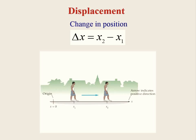Besides looking at where an object is located, we're also often interested in something called the displacement of the object. Displacement is the change in position of the object. We use the notation delta x — this Greek symbol delta means 'change in' — so delta x is the change in position. It is defined as x2, the later position, minus x1, the earlier position. To calculate displacement, you take the later position and subtract the earlier position.